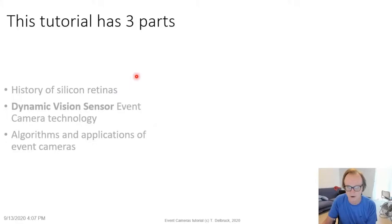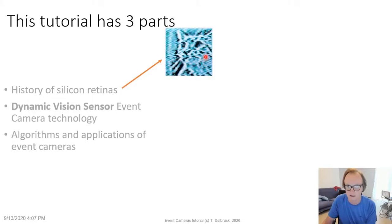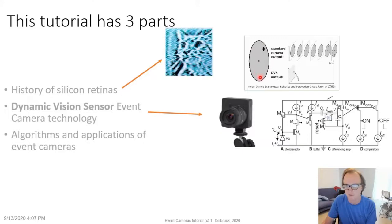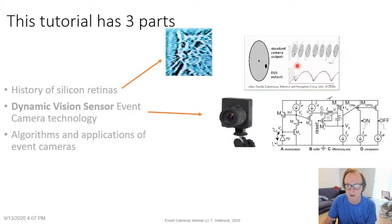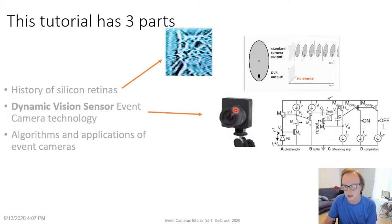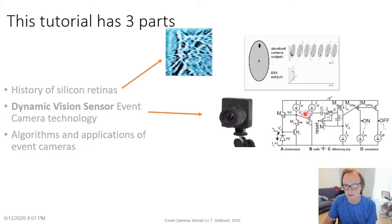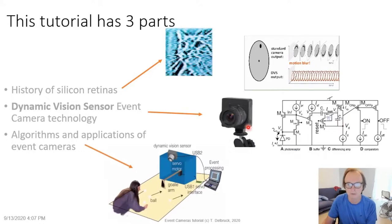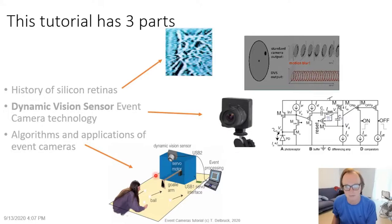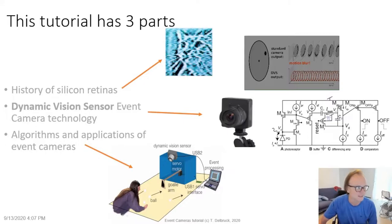This tutorial has three parts. The first is about the history of silicon retinas, going back to Misha Mahowald and Carver Mead's 'Silicon Sees a Cat.' The bulk of the tutorial covers event camera technology — contrasting a conventional camera outputting full frames with the brightness-change stream of events from a Dynamic Vision Sensor, the dominant technology for this kind of sensor. The third part covers algorithms and applications of event cameras in robotics and AI, complementing Davide Scaramuzza's tutorial on computer vision algorithms.